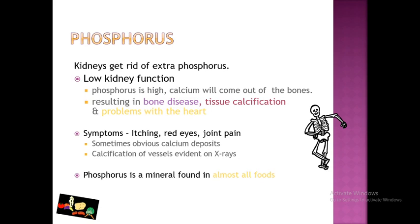Regarding phosphorus: kidneys normally get rid of extra phosphorus. In cases of low kidney function, phosphorus becomes high, calcium will come out of the bones, resulting in bone diseases, tissue calcification, and problems with the heart. Symptoms include itching, red eyes, and joint pain. Sometimes obvious calcium deposits may be present, and calcifications of vessels are evident on X-rays. Phosphorus is a mineral found in almost all foods.